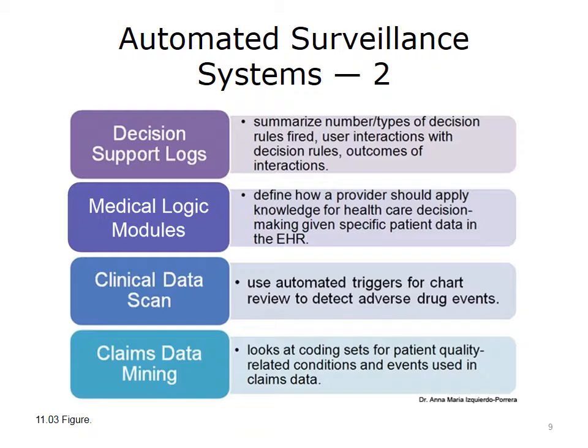Automated surveillance can also be used to improve quality by identifying gaps in care when recommended guidelines are not followed. Claims data, such as Medicare claims data, can be mined to detect whether patients are adhering to preventive guidelines, such as whether patients with diabetes have received their eye examinations, appropriate blood tests, pneumococcal and flu vaccines, and other screening tests as recommended by clinical practice guidelines for this population.